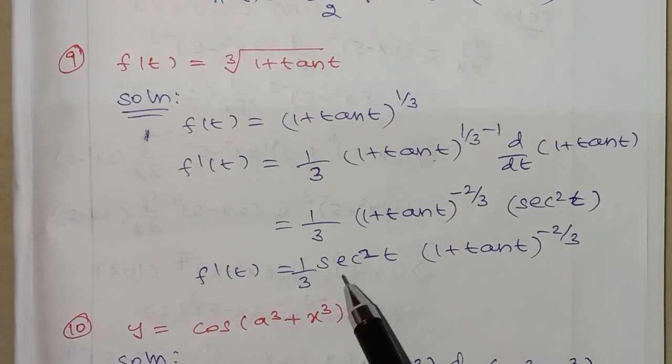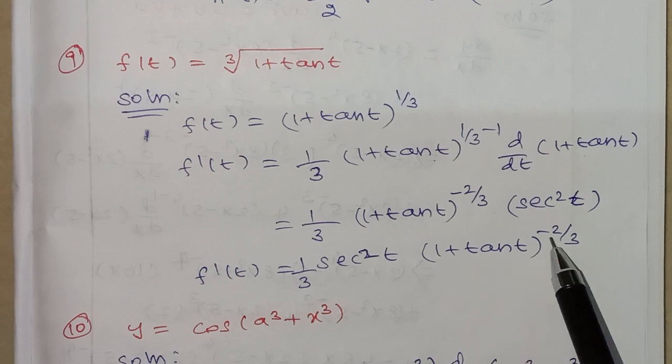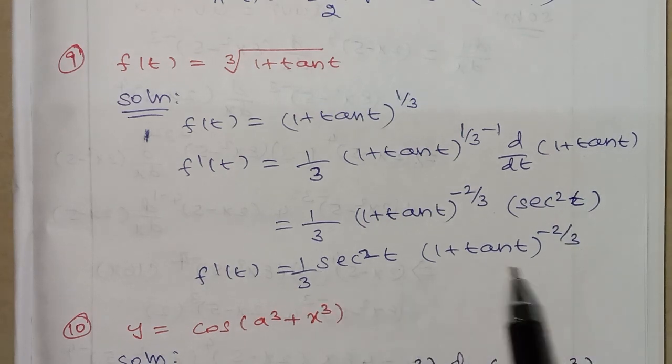1 by 3, sec square t, 1 plus tan t whole power minus 2 by 3. This is the final answer.